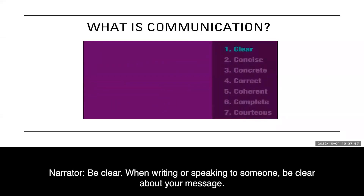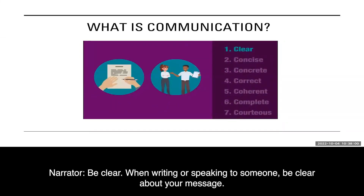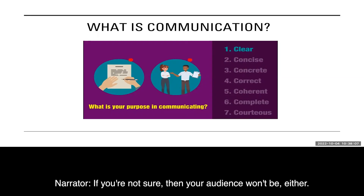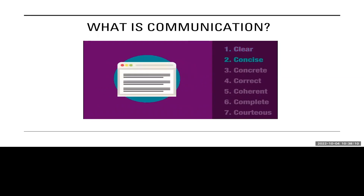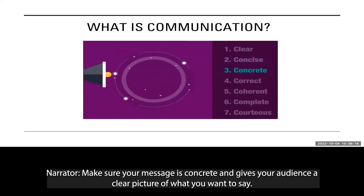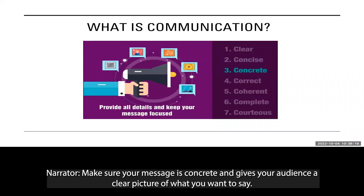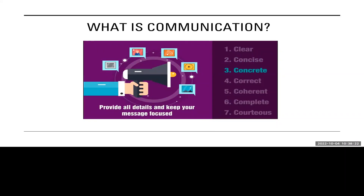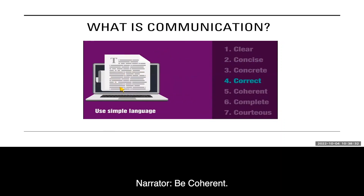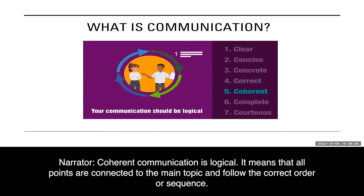Be clear. When writing or speaking to someone, be clear about your message. Think about what your purpose is in communicating with another person — if you're not sure, then your audience won't be either. Be concise. Keep your message short and to the point. Make sure your message is concrete and gives your audience a clear picture of what you want to say. Be correct. Correct communication is error-free and uses language that is understood by others. Be coherent. Coherent communication is logical — all points are connected to the main topic and follow the correct order or sequence.